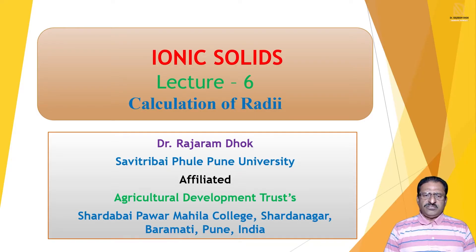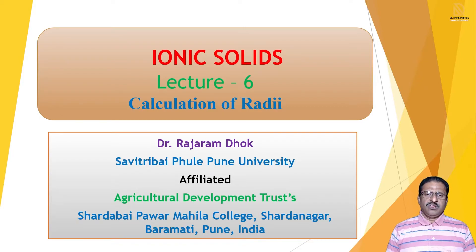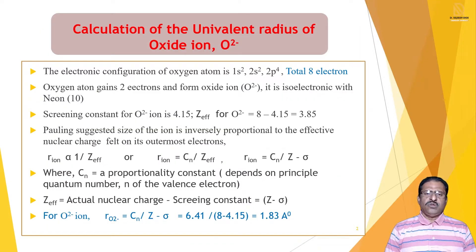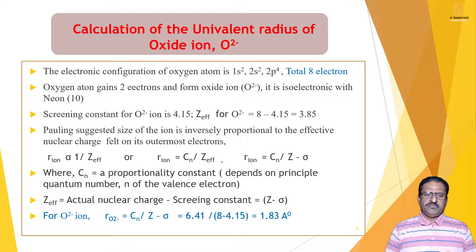Ionic solids lecture 6, calculation of radii. In the last lecture, we discussed what ionic radii are and how they are measured with the help of Pauling's principle. Now we see the calculation of the univalent radius of the oxide ion, that is the O²⁻ ion.